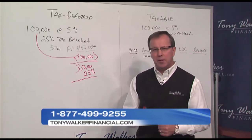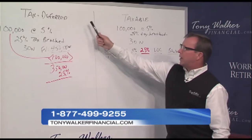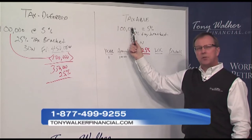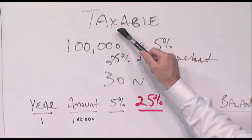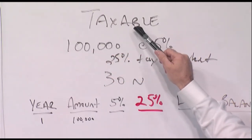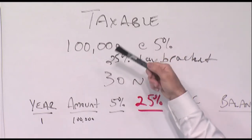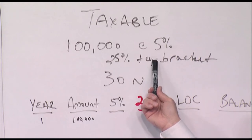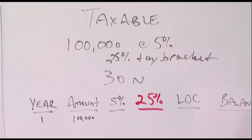Let me show you the next graphic. We're going to compare a tax-deferred with a taxable. Let's set the stage: Joe Lunchbox A has a tax-deferred annuity, Joe Lunchbox B has a taxable account — maybe CDs, mutual funds, or bonds. Over the last several years, on average — you can't get this now in a safe investment, but just for comparison purposes — we make 5%.